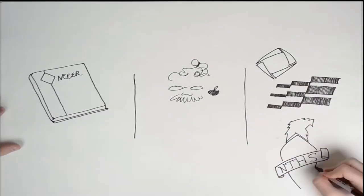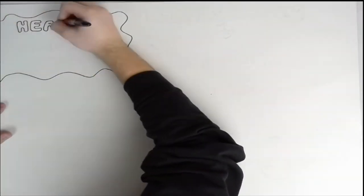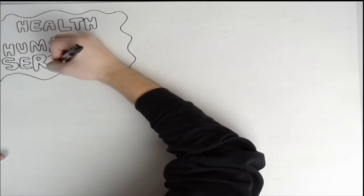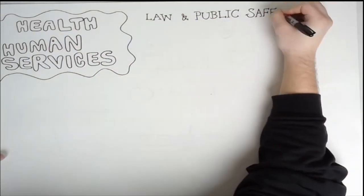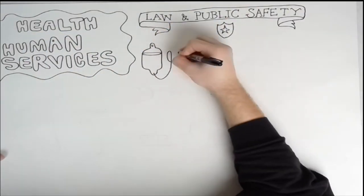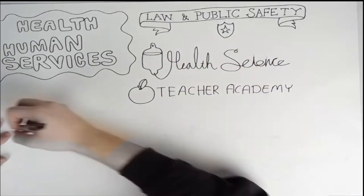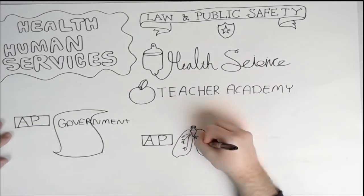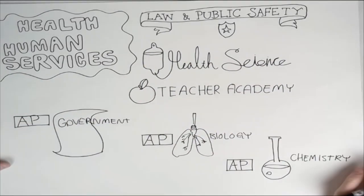Let's take a closer look. First up, Health and Human Services. HHS includes classes in law and public safety, health sciences, and teacher academy. Corresponding academic classes for this institute include AP biology, AP chemistry, AP government, and more.